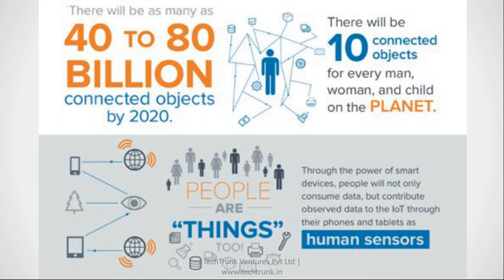That is why all offline companies are driving towards IoT use cases, because IoT will make their devices and machines generate data. When they generate data, these companies will be able to grow at the same fast rate as online companies could grow in the last couple of years. Most of the companies we've seen are data-driven, service-based companies. But manufacturing and product-based companies don't have real-time data connected to the internet — IoT is going to make that possible.